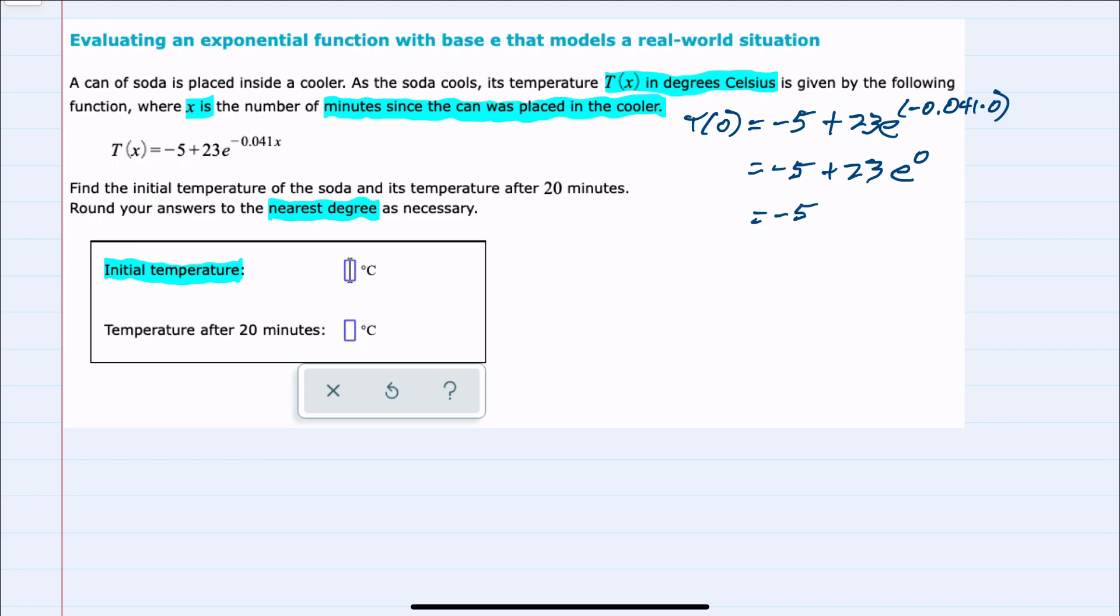Since e to the 0 is 1, 23 times 1 would be 23. So our calculation is just negative 5 plus 23, or 18 degrees Celsius. That would be our initial temperature when x equals 0.